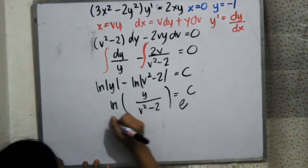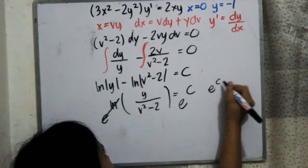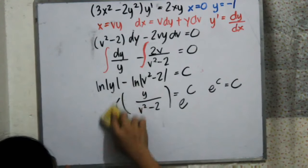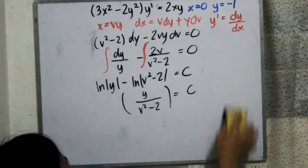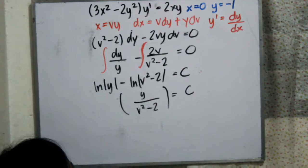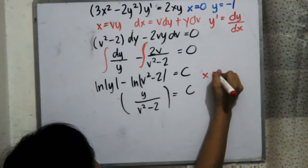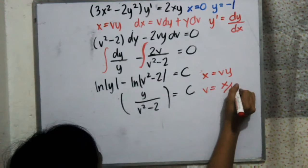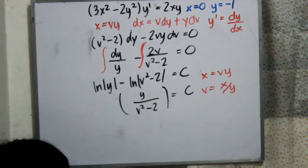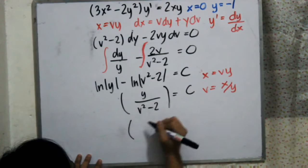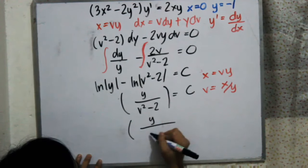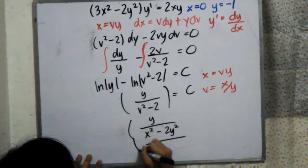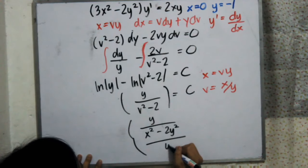To remove the natural logarithm, we apply the exponential rules. Since e raised to C is just a constant C, we can write the expression without the ln. Since we let x equal vy, we know that v equals x over y, and we substitute that into our answer.